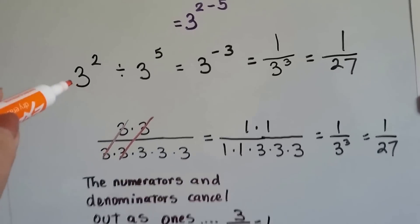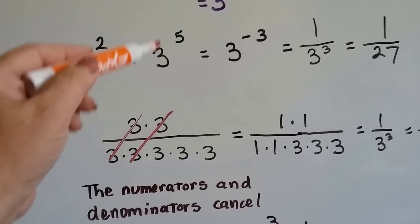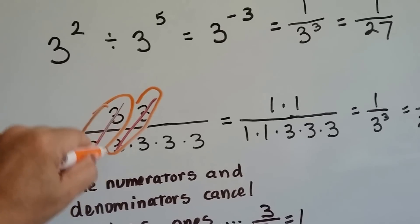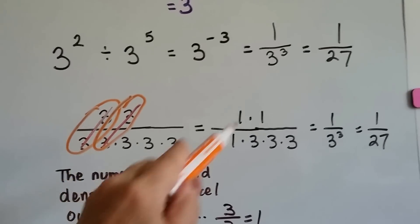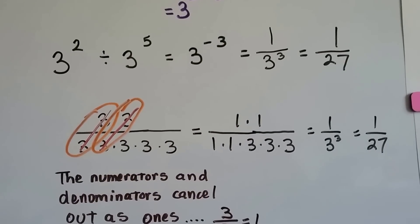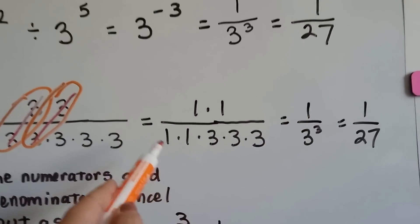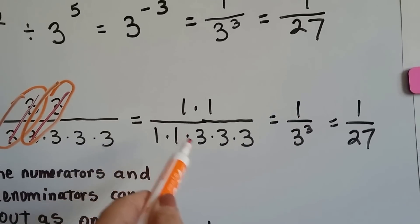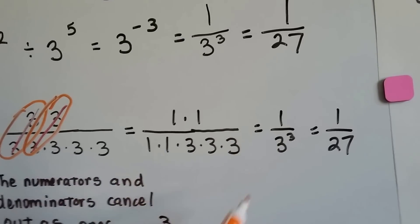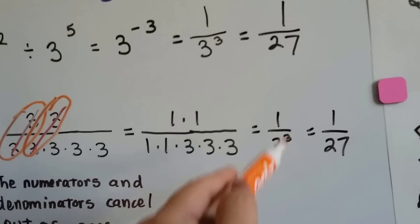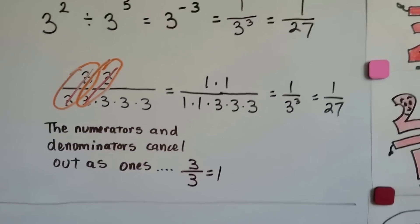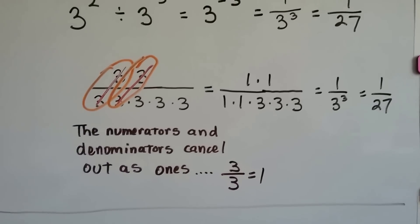Here's what's happening: you've got 3 to the 2nd power on top and 3 to the 5th power on the bottom. Two of the 3's cancel out as 1's, and two on the bottom cancel as 1's. So 1 times 1 is 1 on top, and 1 times 1 times the remaining three 3's leaves 3 to the 3rd power. So it's 1 over 3 to the 3rd power — that's 1/27. The numerators and denominators cancel out as 1's: 3 over 3 equals 1.